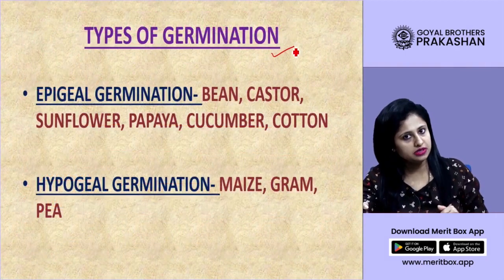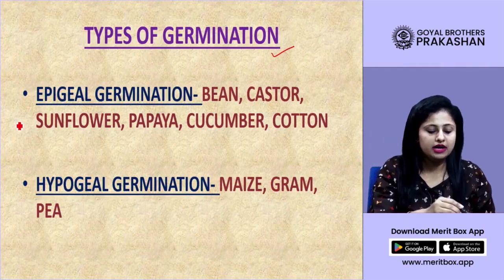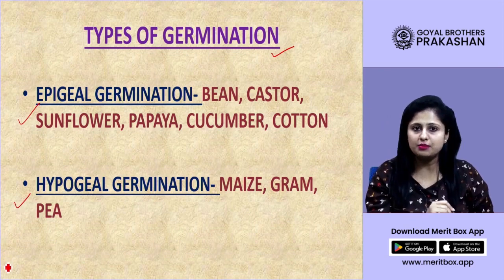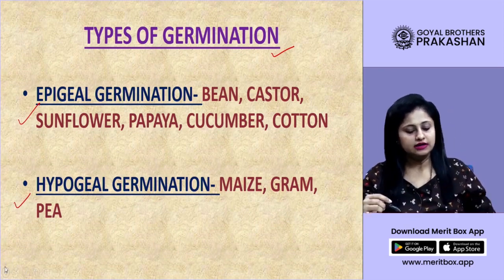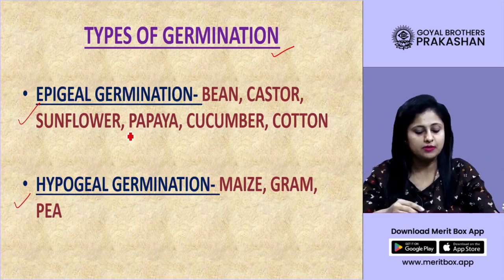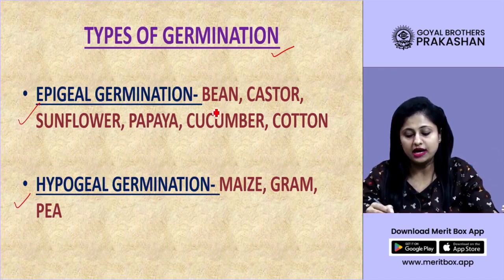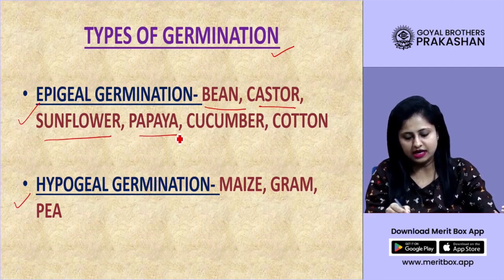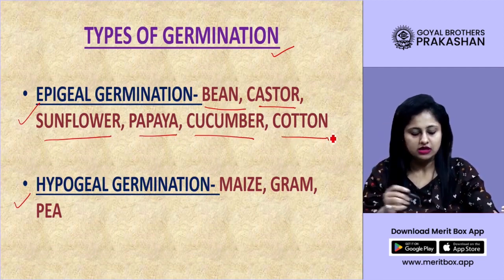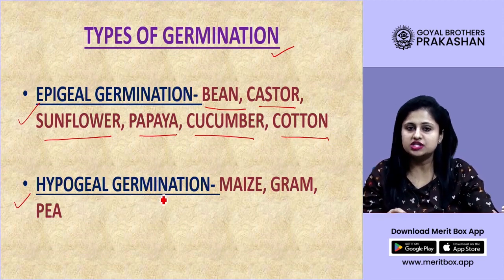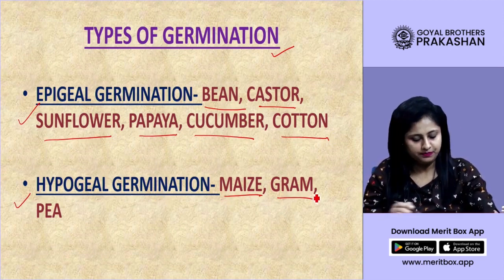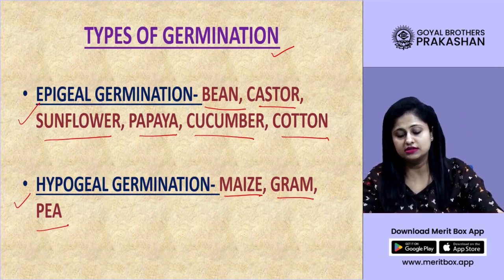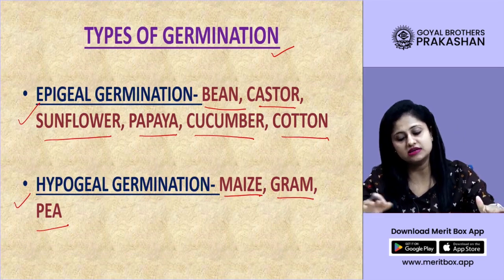There are two types of germination: epigeal germination and hypogeal germination. Epigeal germination is shown by bean, castor, sunflower, papaya, cucumber, and cotton. Hypogeal germination is shown by maize, gram, and pea.